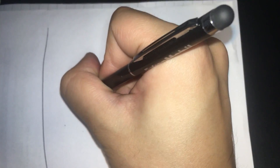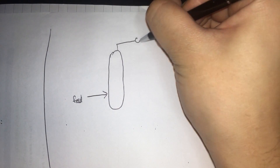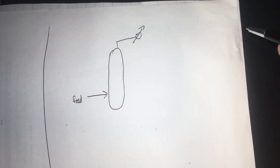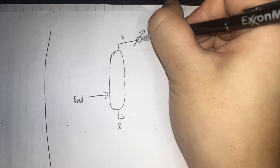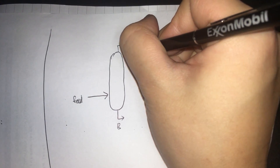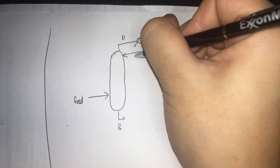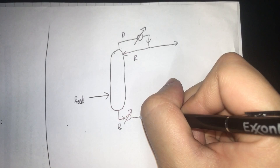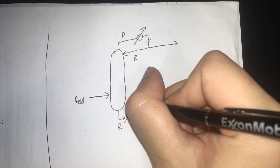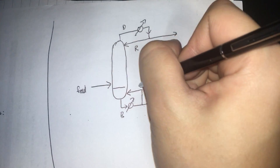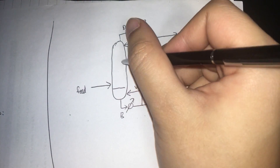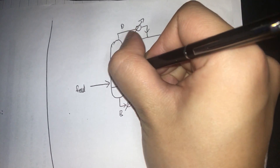Assuming you know about distillation columns, you should know that if you have a column with some feed going in, you'll have some distillate going to the top and some bottoms going to the bottom of the tower. The distillate will be condensed — sometimes partially, sometimes completely — and some of it will be refluxed. The bottoms will go through the reboiler; some will be taken out as bottoms, and some will go back as boiled-up vapor, flowing up the tower. In the tower, you will have many, many trays typically.